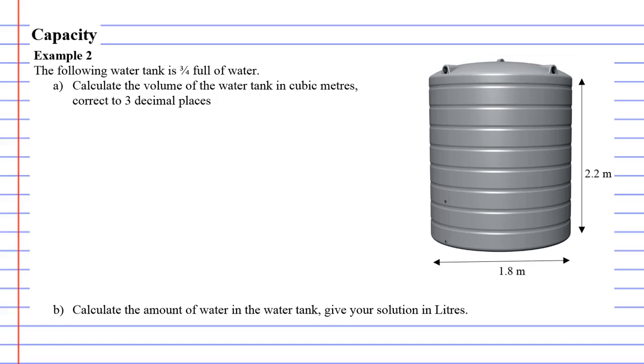Alright, now question A is, calculate the volume of the water tank in cubic metres correct to 3 decimal places. So what we're going to do is we're just going to treat it like a normal cylinder. And the volume of a cylinder is given by the formula volume equals pi r squared h, or also area times height is the other one.